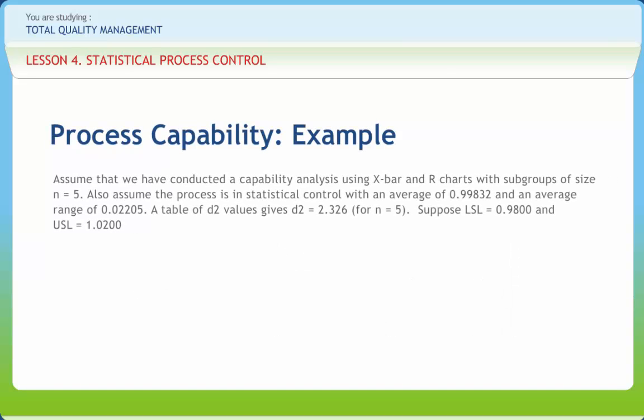Go through the example. Cp equals 0.703. Since this is less than 1, the process is not regarded as being capable.